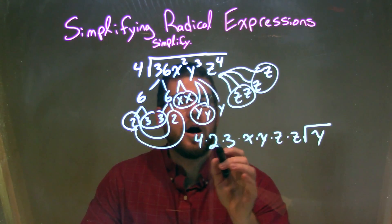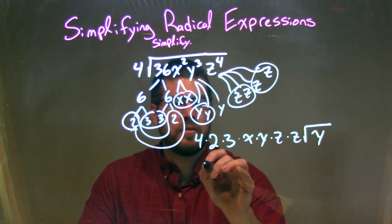So now we simplify this. 4 times 2 is 8, times 3 is 24, so we have 24.